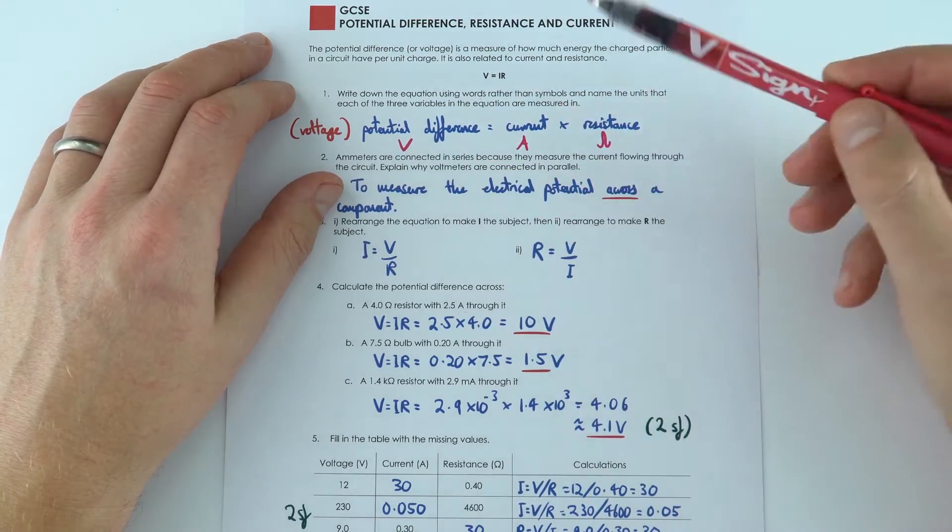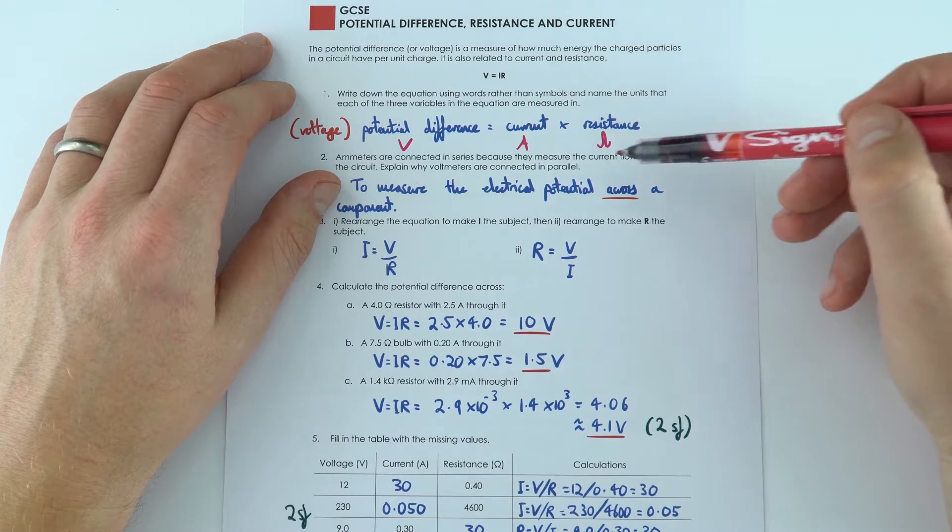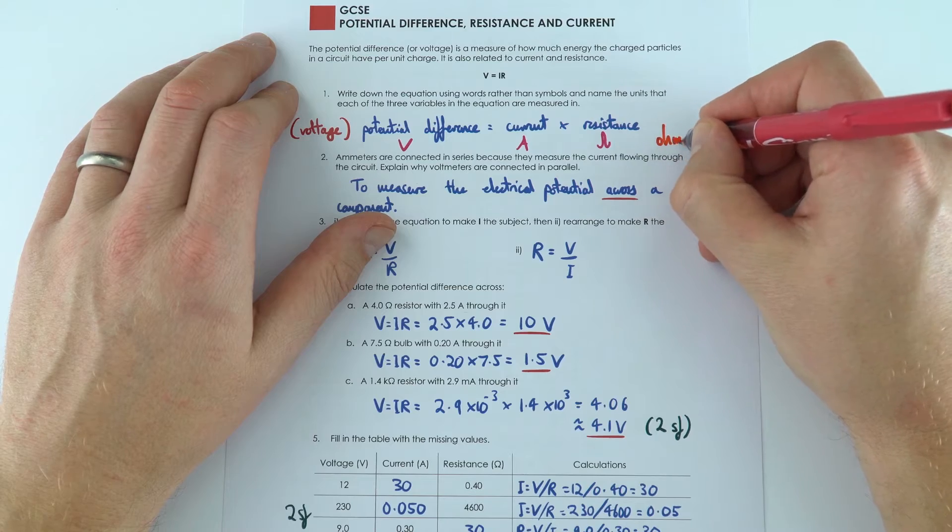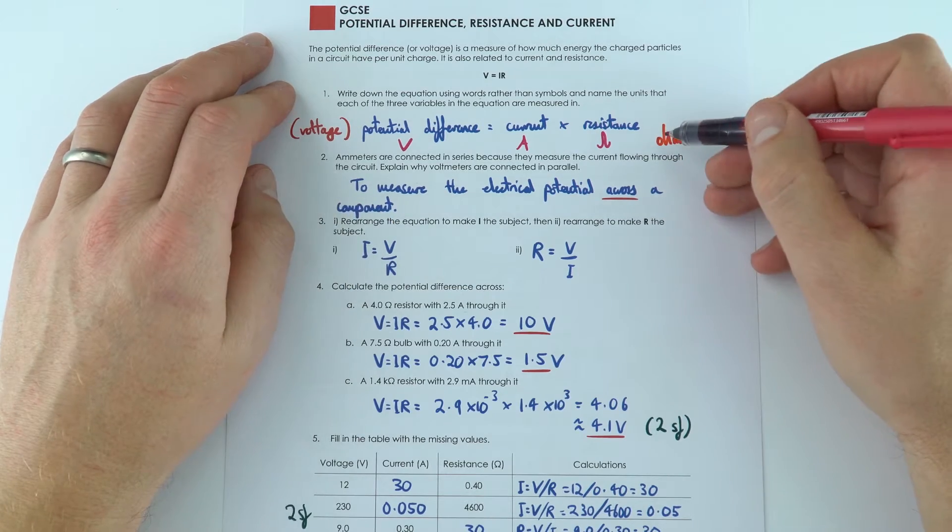So potential difference is measured in volts, current in amps, and resistance in ohms. This letter here is a Greek letter omega, so ohms are the unit for resistance.